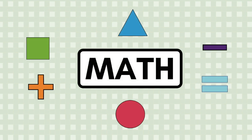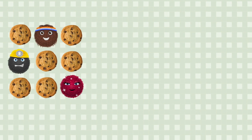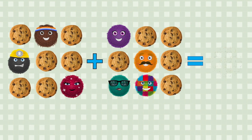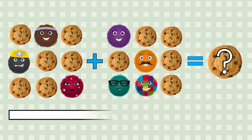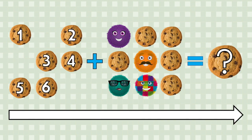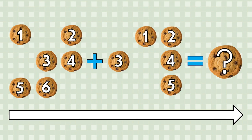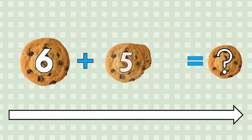But have you ever noticed the math skills you use when you practice coding? Think about the way you solve a math problem, like this. There are ordered steps to follow. I should solve this problem moving left to right. Along the way, I need to make careful decisions, and at the end, I will double check my work.